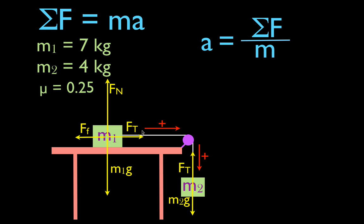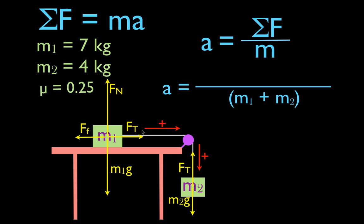Now we can apply Newton's second law to this system of objects. We put in the forces and the total mass, which is M1 plus M2. We're going to look at each object individually and sum up the forces that are affecting the motion of each object.